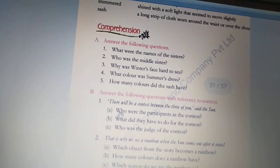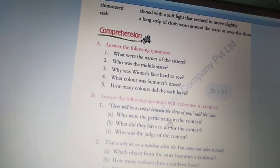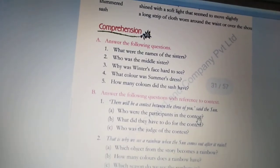Now the question is, who were the participants in the contest? The three sisters whose names were summer, winter and monsoons. They were the participants in the contest. Three sisters thi jo summer, winter, monsoon.